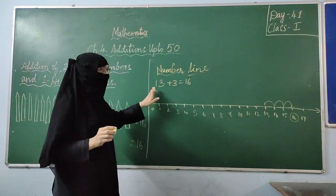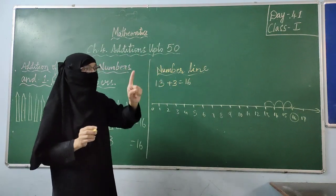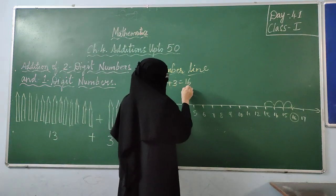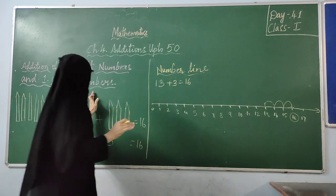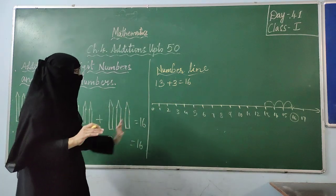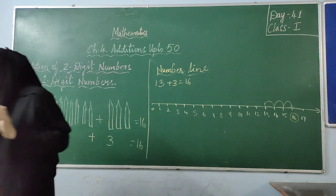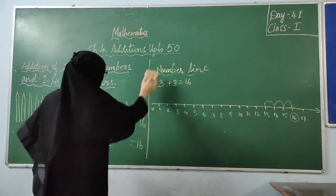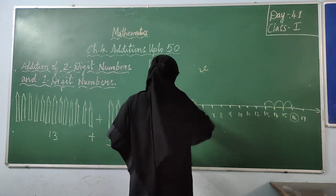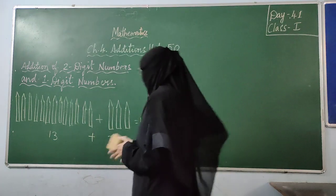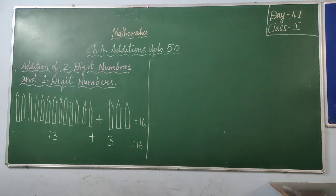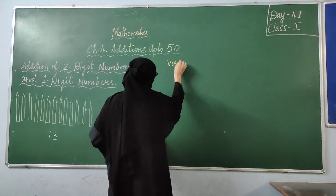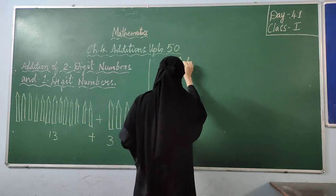This is what we have to do on the number line. Already I showed you that with a single digit number. Here it is a 2-digit number plus a single digit number. So, we studied how to do it in the horizontal pattern. Now I am going to show the vertical method.